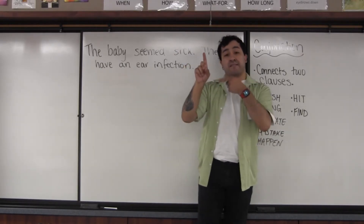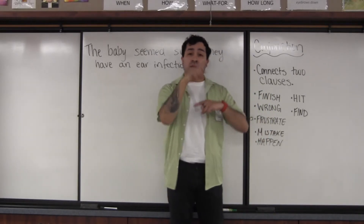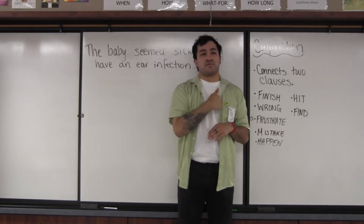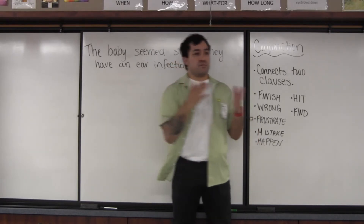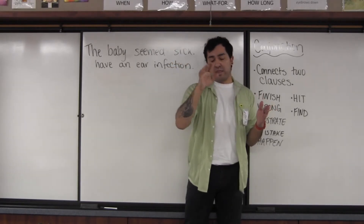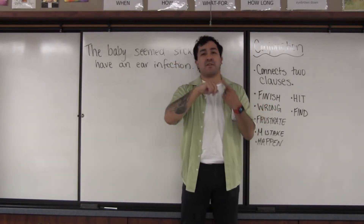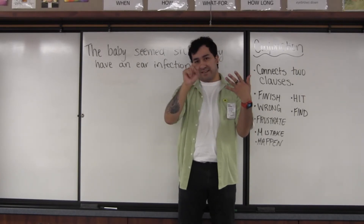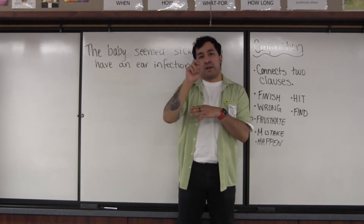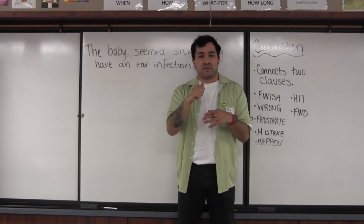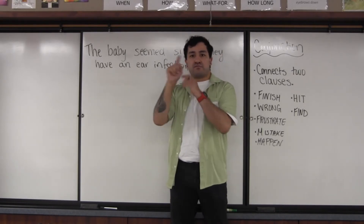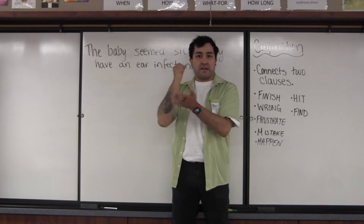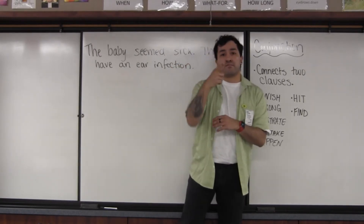So one very common conjunction is AND, but in ASL we don't typically use it. We do have a sign for it, but it's seen as more English because in ASL we have other ways to show the same idea of AND. We could use listing, role shifting, or contrastive structure. There are so many other things we can do, so there's no need for AND when there are more ASL ways to express it.